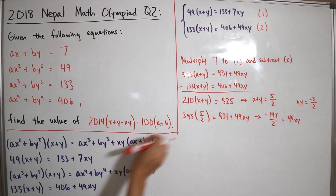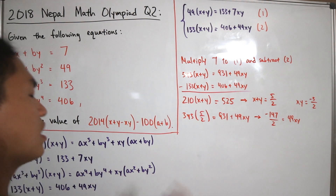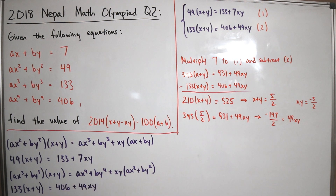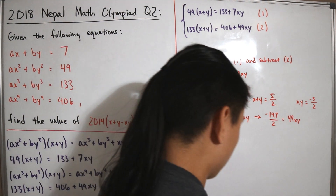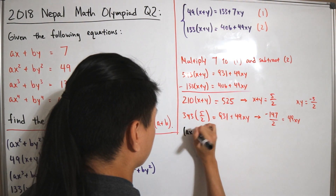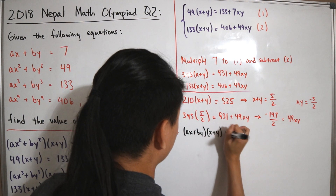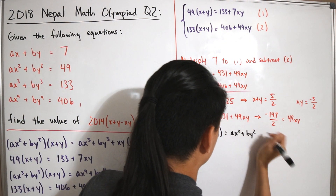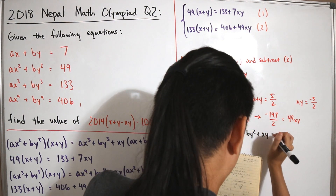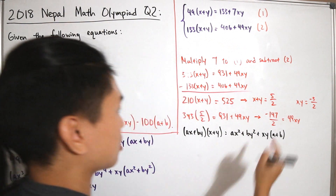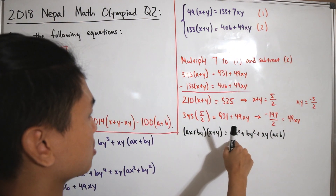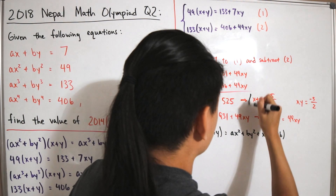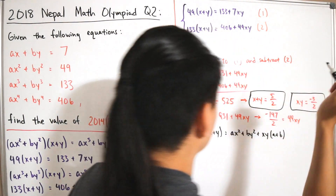Now we need to find a + b. The approach is the same: take ax + by and multiply by (x + y). Using FOIL and simplifying gives ax² + by² plus xy times (a + b). We already know ax + by = 7, x + y = 5/2, ax² + by² = 49, and xy = -3/2, so we can substitute directly.